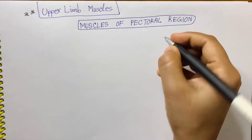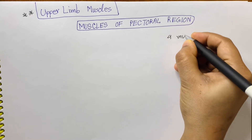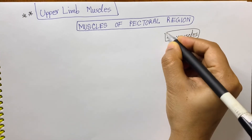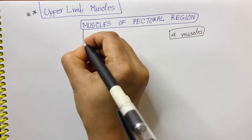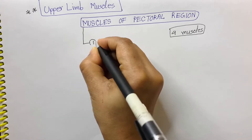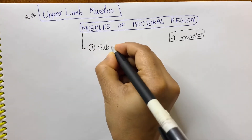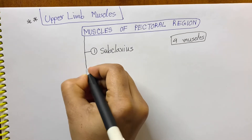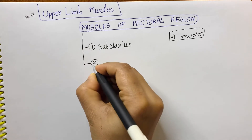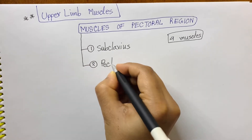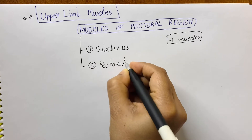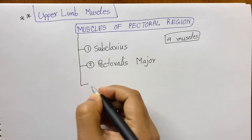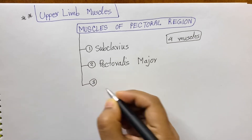We have four muscles in our pectoral region. These are: subclavius, which is a small muscle, and then pectoralis major.